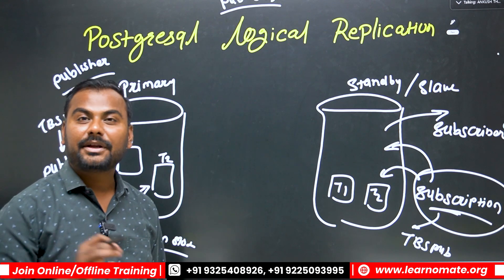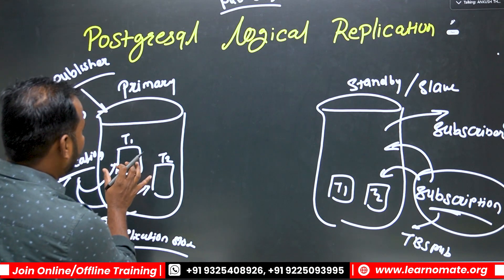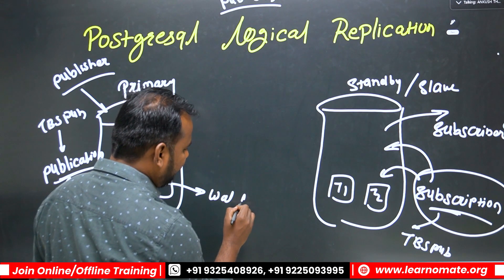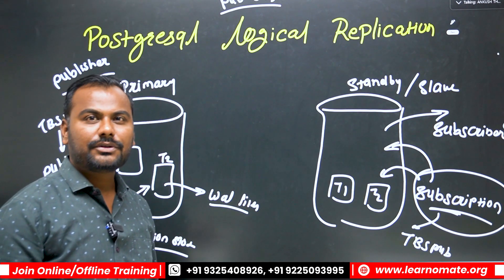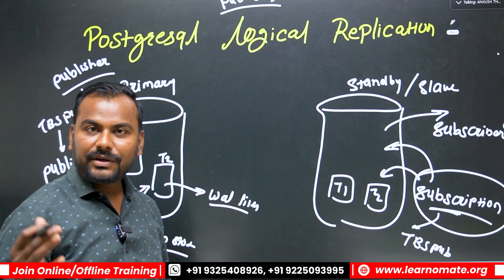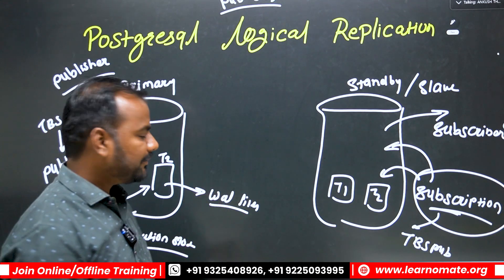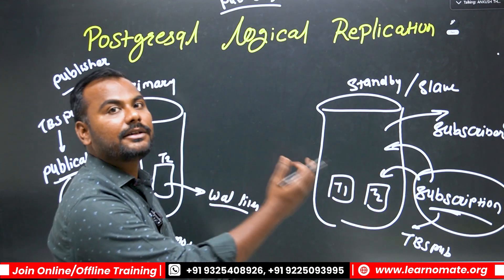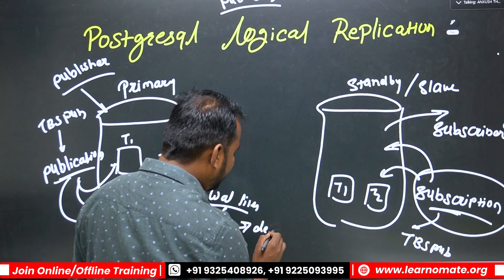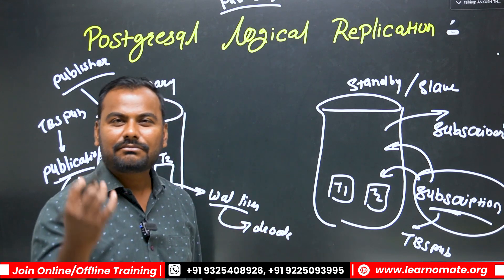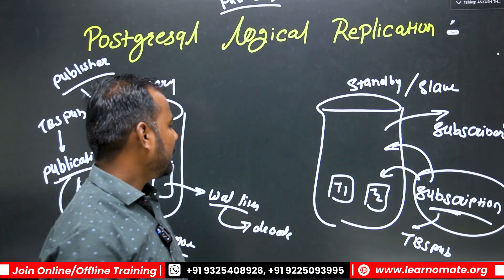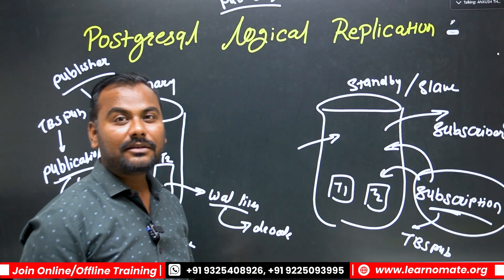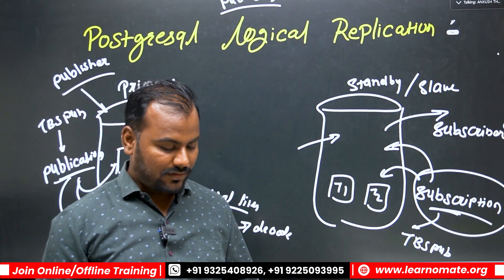What does the replication slot do? Whenever you make changes on the primary, corresponding WAL files get created. Whenever you make changes to the database, a transaction log is created — we call it WAL logs. But these WAL logs will not be directly sent to the standby. Instead, they will get decoded — converted into a different format — and then sent to the standby side.